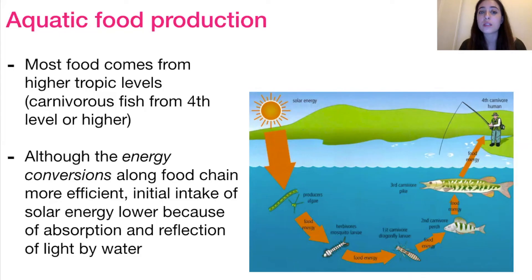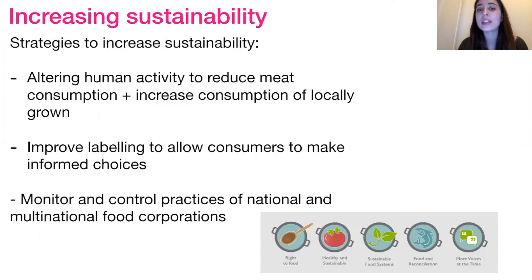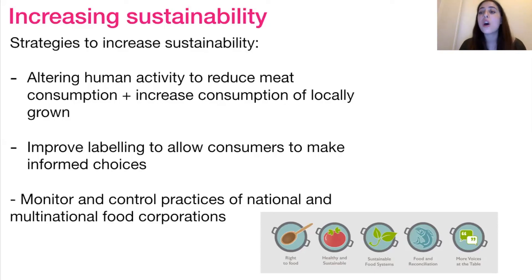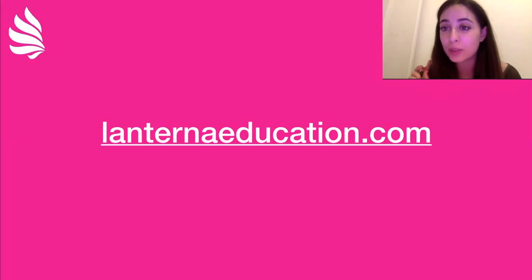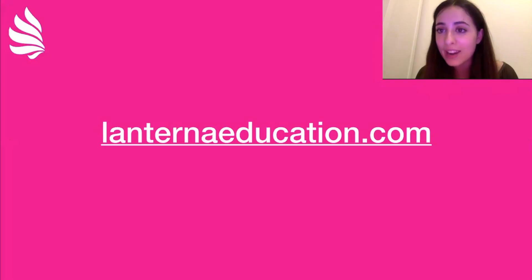So aquatic food production systems are interesting to consider because of those two aspects. And the final thing I want to tell you guys about is how we can increase the sustainability of food production systems. Hopefully you can see that eating at lower trophic levels, so reducing meat consumption and increasing consumption of locally grown food, would increase sustainability. Also improving labeling, so allowing consumers to make more informed choices about where their food is coming from and what is in it. And then at a higher level, monitoring and controlling practices by national and multinational food corporations. So these are ways that we can increase sustainability. That concludes episode five, but go ahead and click on episode six to hear about the atmosphere as a system. And as always, guys, make sure to check out our website to learn how I and others could become your tutor as well.